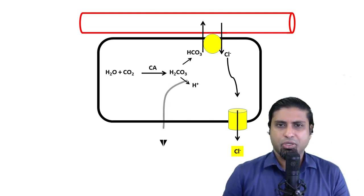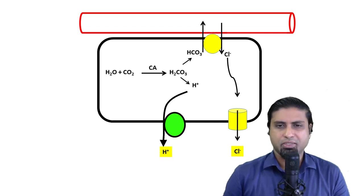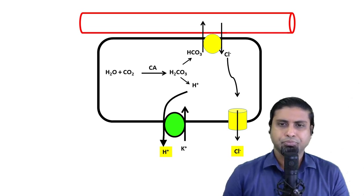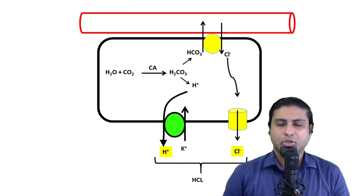Similarly, the H+ ions also get thrown into the lumen of the stomach via a transporter on the luminal aspect of the parietal cell. This transporter is an anti-porter as well and it pumps potassium ions in the opposite direction. This is the H+K+ATPase pump, also called the proton pump. We now have H+ and Cl- in the lumen of the stomach, which combine to give us hydrochloric acid, responsible for the highly acidic pH in the stomach.